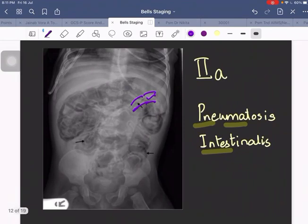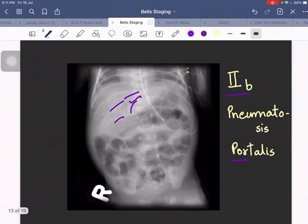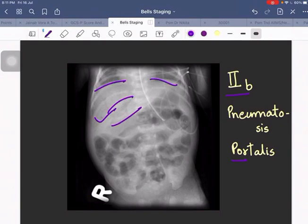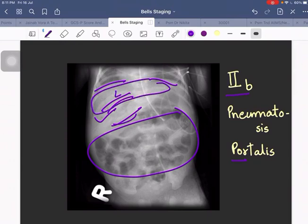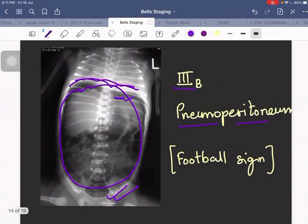Let's discuss some images. 2a is pneumatosis intestinalis, air in the wall of the small intestine. For 2b, pneumatosis portalis, air inside the portal tract. This is the diaphragm, this is intestine, and this is the portal tract. This is the liver. For Stage 3b, pneumoperitoneum, a football sign is given. Air present just below the diaphragm.